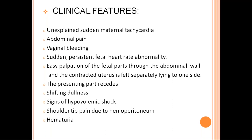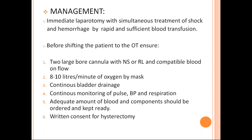Clinical features of uterine rupture: unexplained sudden maternal tachycardia, abdominal pain, vaginal bleeding — we should be very alert to these features to diagnose early. Sudden persistent fetal heart rate abnormality, most often fetal bradycardia. Easy palpation of fetal parts through the abdominal wall and the contracted uterus felt separately lying to one side. The presenting part recedes, shifting dullness, signs of hypovolemic shock, shoulder tip pain due to hemoperitoneum irritating the diaphragm, and hematuria.